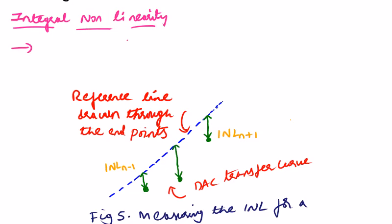The next topic is integral non-linearity. INL is the difference between the data converter output values and a reference straight line. In the previous DNL we were just calculating the height, but here we take one reference line — the line with the ideal slope — and check whether each point is deviated from that reference line. It is the difference between the data converter output values and a reference line drawn through the first and last output values.